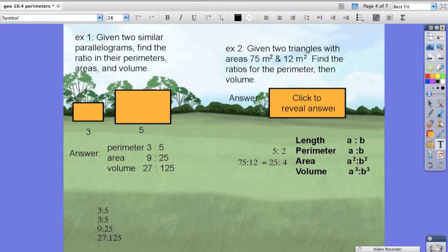Now, notice how to get the perimeter from area, we have to downsize our square root. Now, to go to volume, notice it's a cubed to b cubed. So if a is 5, then a cubed should be 125 to 8.